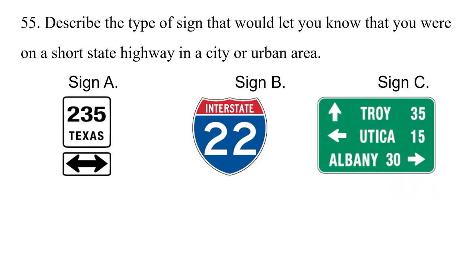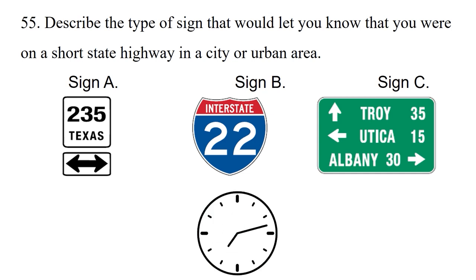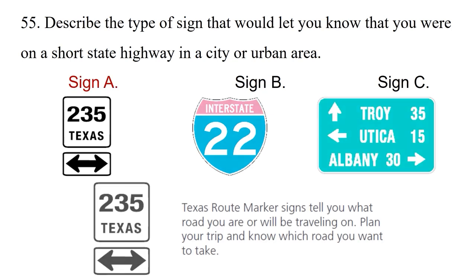Question: Describe the type of sign that would let you know that you were on a short straight highway in a city or urban area. Option 1: Sign A. Option 2: Sign B. Option 3: Sign C. The answer is option 1: Sign A. Texas route marker signs tell you what road you are or will be travelling on. Plan your trip and know which road you want to take.